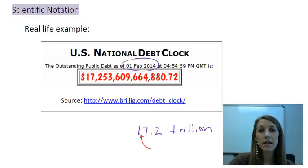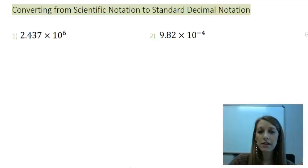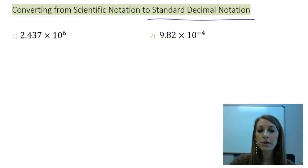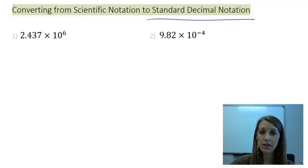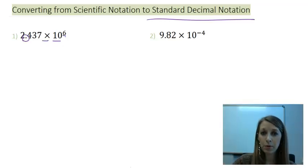Now that we know what it looks like and that it's something we see in real life, let's do some math examples. The first set of examples is converting from scientific notation to standard decimal notation — meaning just how we would see it in day-to-day life, with numbers fully written out. Notice that both examples are officially in scientific notation, with the decimal after the first digit, times 10 to some power.